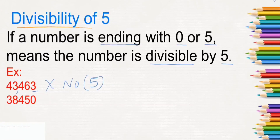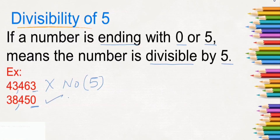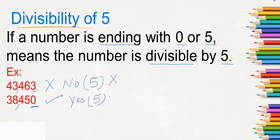Here is another number, 36,450. Here at the ones place, it is 0. If a number has 0 or 5 at the ones place, the number can be divided by 5. So the first number is not divisible by 5, and the second number is divisible by 5.